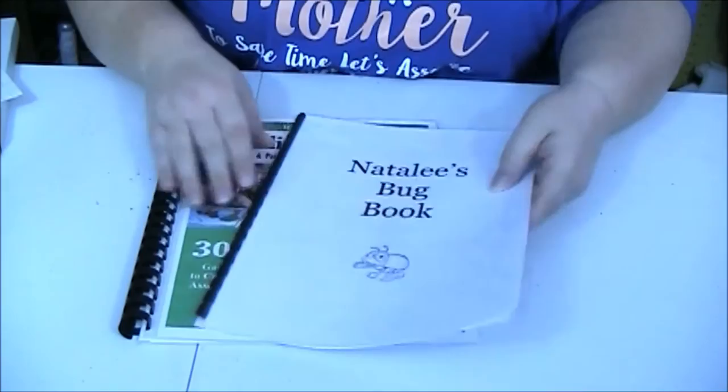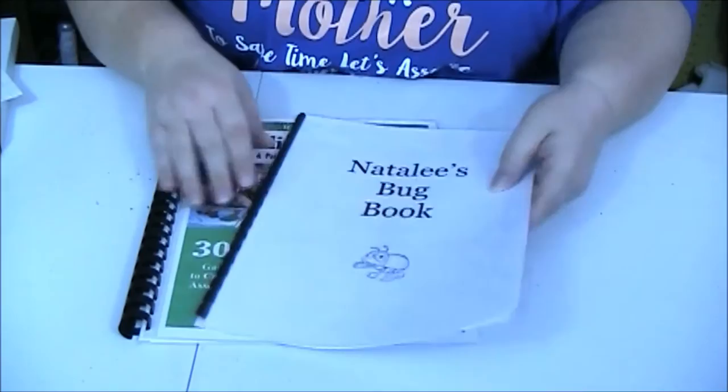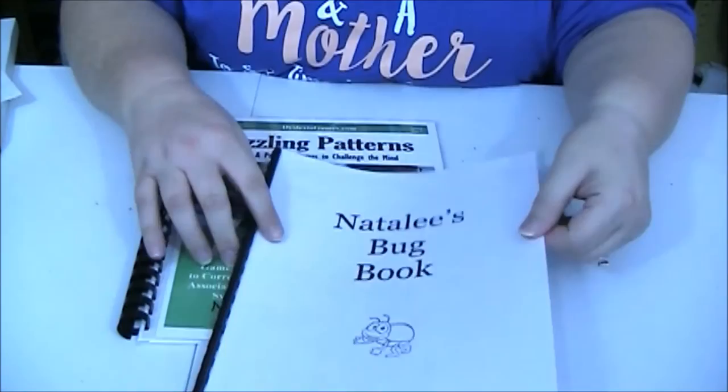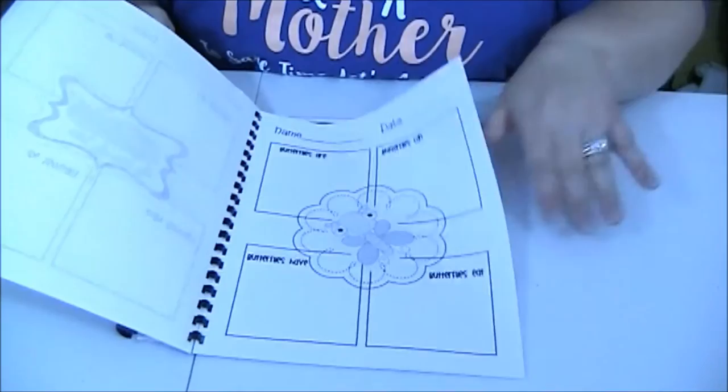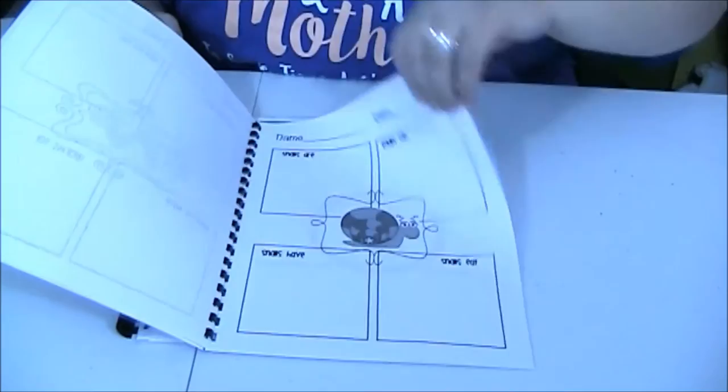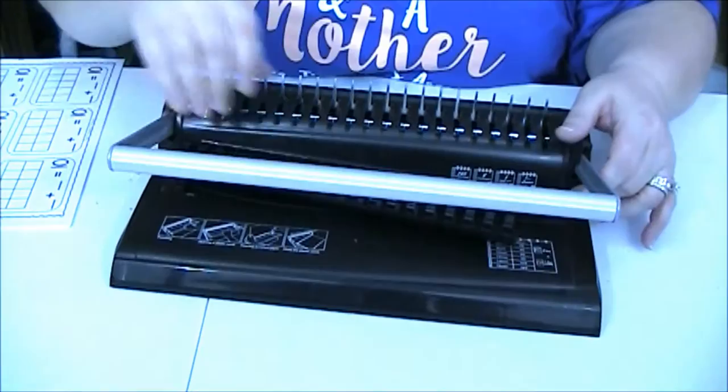So here is a notebook and the cover is laminated and inside we have things that we are going to learn about different bugs. So we have ants and bees and lady bugs and butterflies, worms, snails, beetles. So all different things in here. So it isn't just bugs but it is all different types of bugs and creepy crawlies.